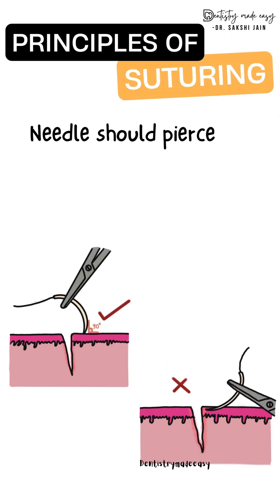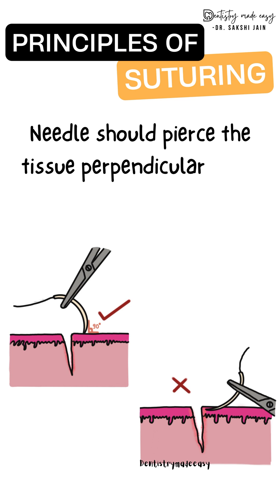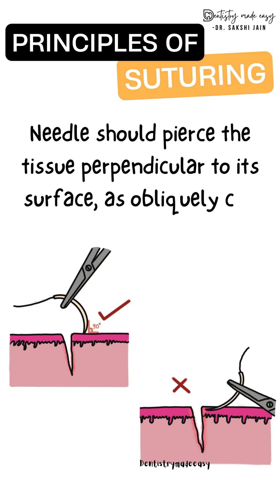The next principle is the needle should always pierce the tissue at 90 degrees. If you increase that angle — if it is going more obliquely — there are chances of tissue tear.